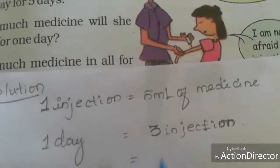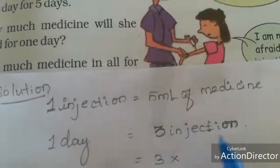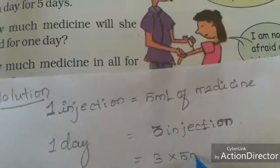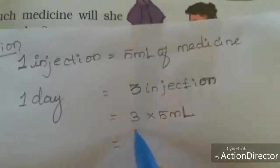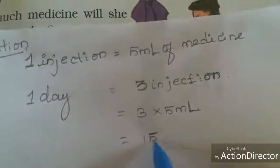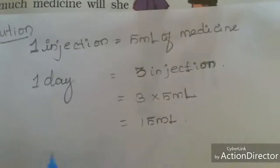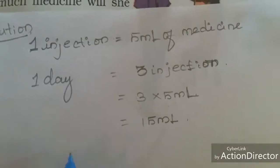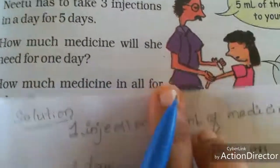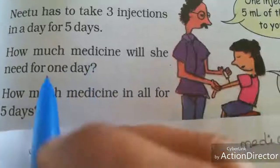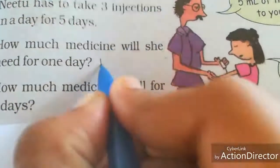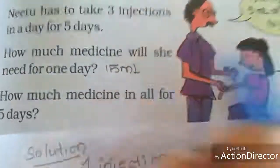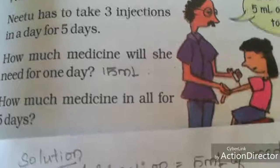1 injection is equal to how many ml of medicine? 5 ml. So 3 injections means 3 into 5 ml of medicine. 3 fives are 15. Per day, she will take 15 ml of medicine. Neetu will need 15 ml of medicine for 1 day.